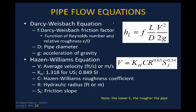The Darcy-Weisbach equation: H sub L, the head loss due to friction, equals f — the Darcy-Weisbach friction factor, which is a function of both the Reynolds number and the relative roughness epsilon over D — times the length of the pipe divided by the diameter, times the velocity head.